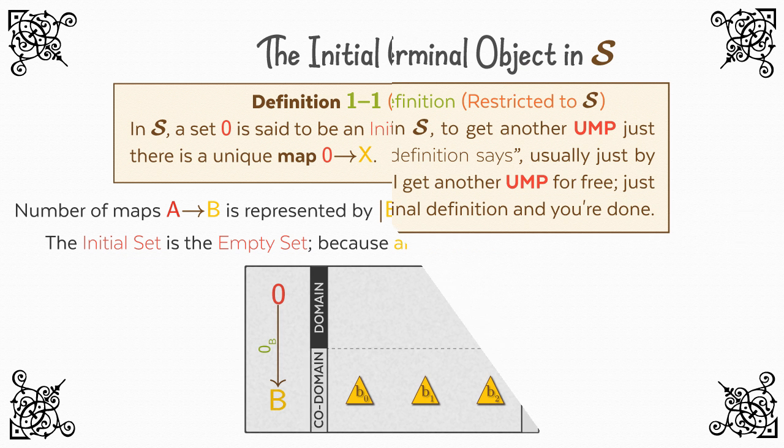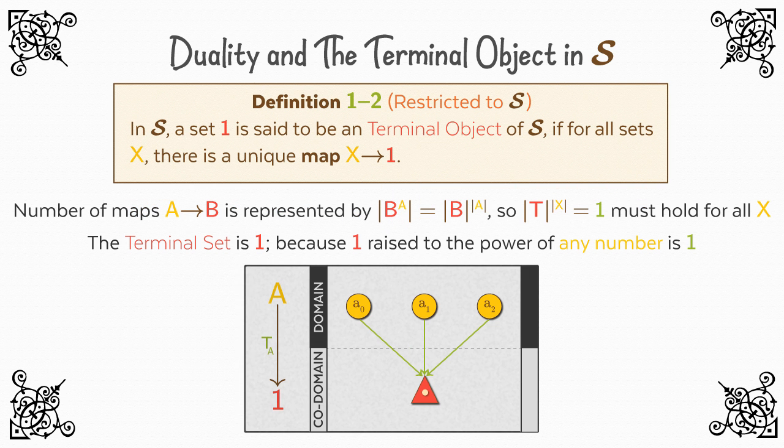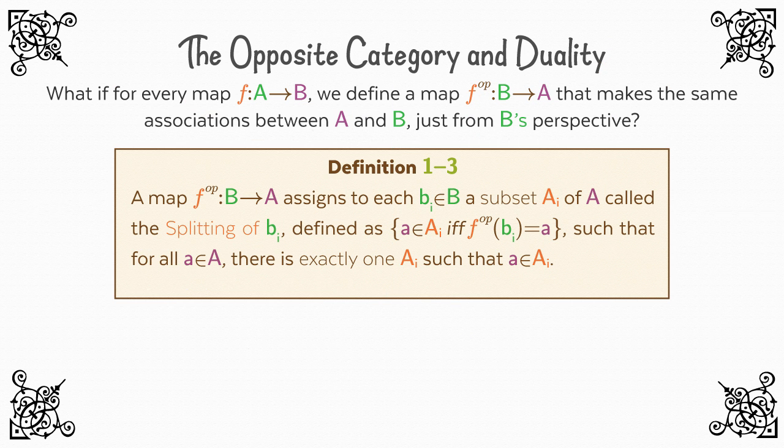This led us to contemplate the reason for duality. Why could we simply reverse the arrow in the definition of the initial object to get a new definition, the terminal object? This led us to look at maps from a different perspective, and led to the realization that every category has a mirror category or opposite category C-op, where the objects are the same as C, but for each arrow f from a to b in C, there exists a corresponding arrow f-op from b to a in C-op, that describes the same arrow but from a different perspective.